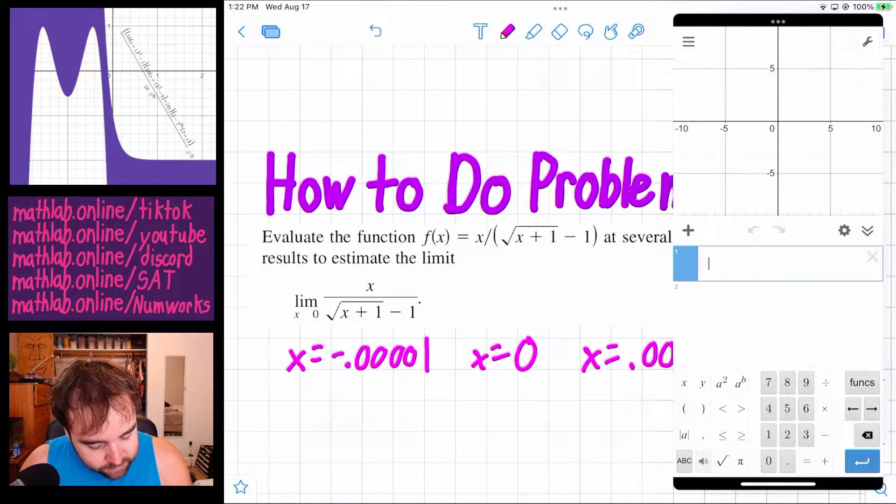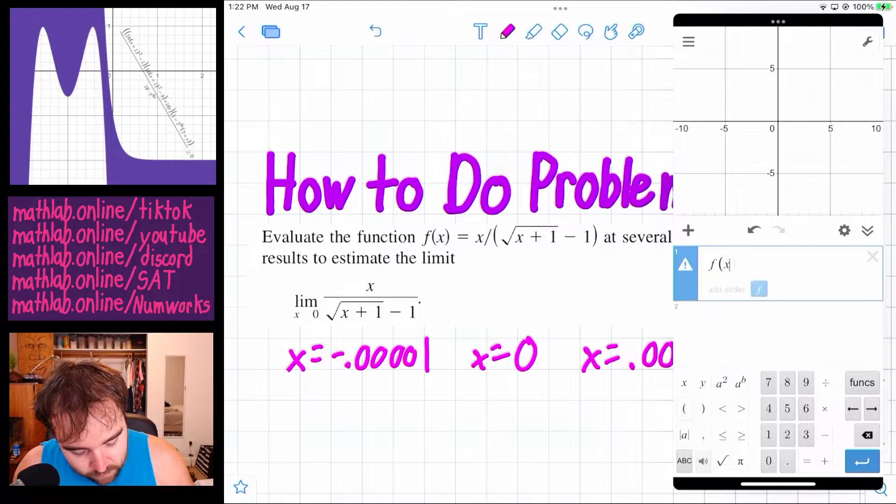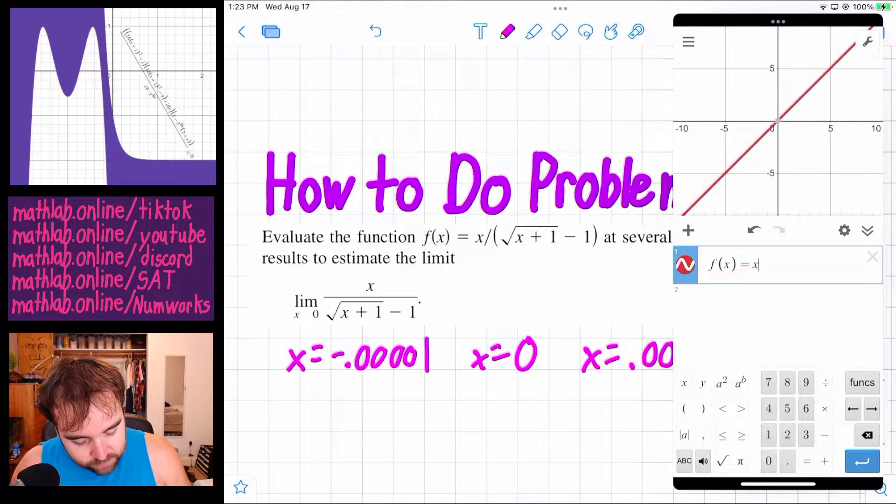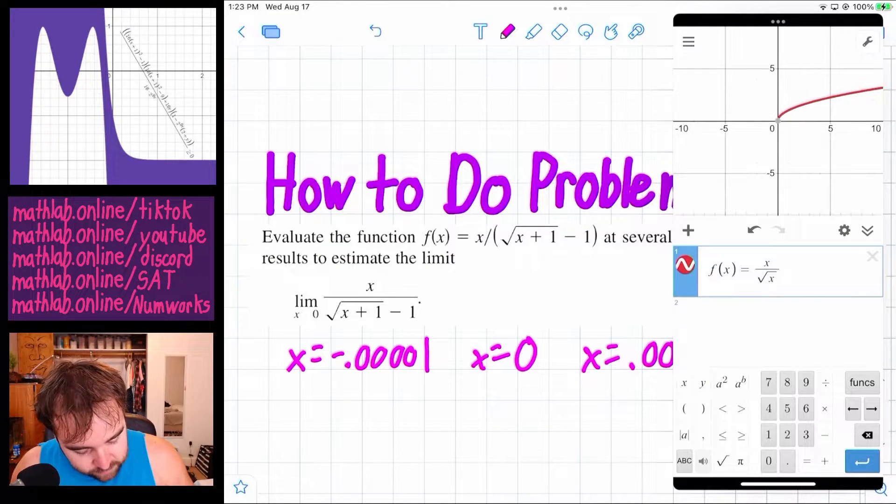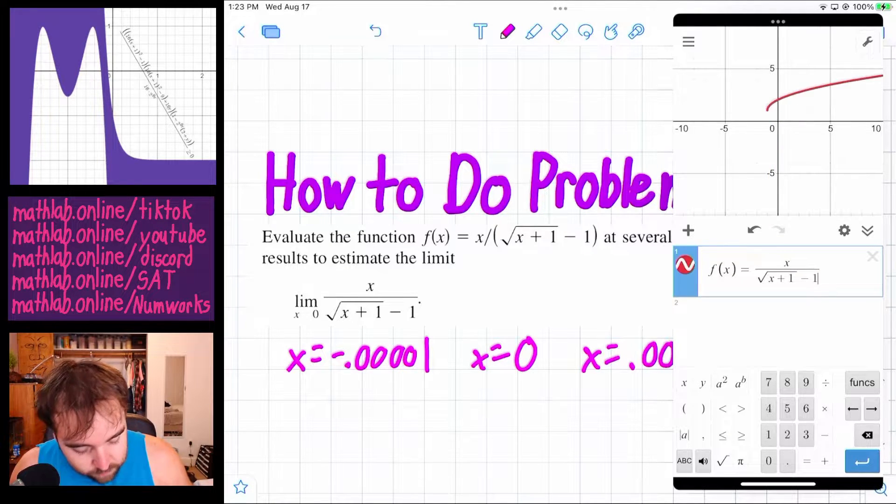Instead, we have to plug in these values really close to zero since plugging in zero is not allowed. So here's how we're going to do that efficiently. We're going to write out this function: f of x equals x over the square root of x plus 1 minus 1.